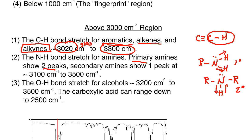The O-H bond stretch for alcohols appears from 3200 to 3500 cm⁻¹ — it's very broad, rounded, and strong, dipping down toward the x-axis. For carboxylic acids, the O-H stretch can range all the way down to 2500 cm⁻¹, forming a massive, sometimes jagged peak that occupies the upper left portion of the IR. If you're unsure whether you have an alcohol or carboxylic acid, check the ¹H NMR: carboxylic acid protons appear uniquely at 11–12 ppm.